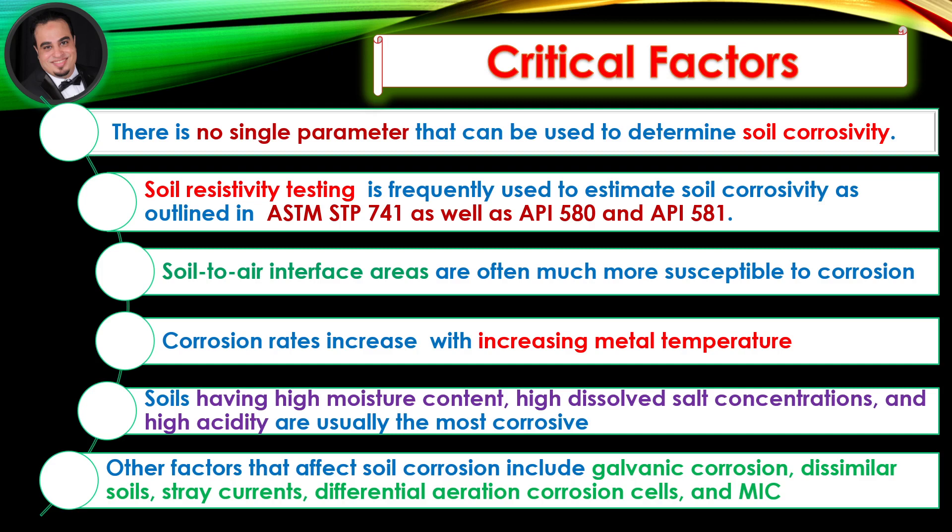Soils having high moisture content, high dissolved salt concentrations, and high acidity are usually the most corrosive. Other factors that affect soil corrosion include galvanic corrosion, dissimilar soils, stray currents, differential aeration corrosion cells, and microbiologically influenced corrosion.